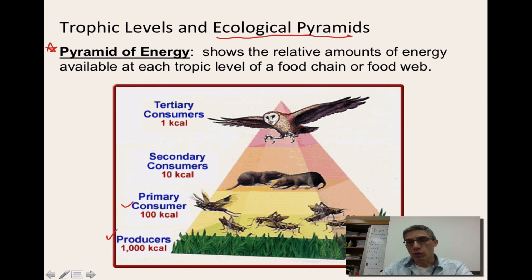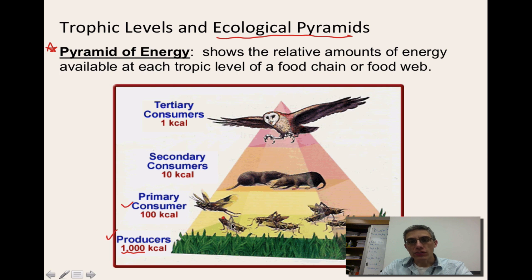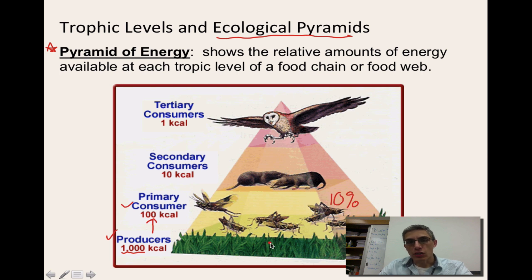The producer is all of the organisms in that particular ecosystem that can actually make their own food. Down here we have green material — those would be the plants — and that's where all of your energy is going to be stored in the very beginning. We're going to say there are 1,000 kilocalories of energy stored in that plant material. As insects — which look like grasshoppers — come in and consume those producers, energy is passed up to the next trophic level. Approximately 10% is passed on, so 10% of 1,000 gives us 100 kilocalories.